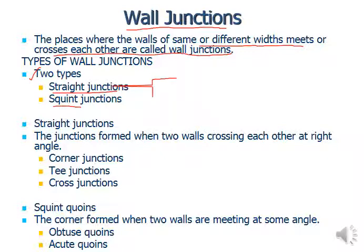If the angle is not a right angle — any obtuse or less than 90 degrees — you may have a squint junction, at an angle greater than or less than 90 degrees. An angle equal to 90 degrees gives straight junctions. The junctions formed when two walls cross each other at right angle are called straight junctions, and you may have corner junctions or T-junctions.